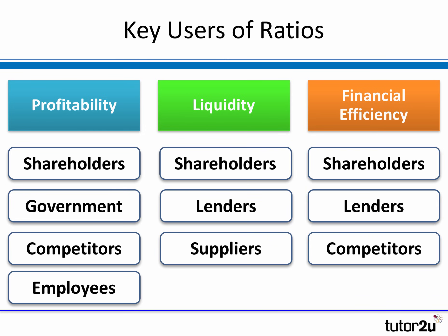When it comes to financial efficiency, it's very similar. Shareholders definitely want to make sure that the business is being run efficiently and that the capital tied up in the business is being minimized. Lenders and creditors are very interested in how the working capital of a business is managed. And competitors will be interested to see whether a competing business is able to manage its assets more effectively and efficiently, because that could be a source of competitive advantage.